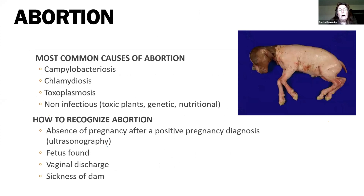The most common infectious diseases causing abortion are Campylobacter, Chlamydia, and Toxoplasma. Some non-infectious reasons for abortion include toxic plants, genetics — most commonly mismatching of chromosomes and development of genetic monsters that are not compatible with life — and nutritional causes. If we're not meeting the nutritional needs of our animals, both plane of nutrition or in some cases minerals, we can see development of placental insufficiency where the placenta isn't able to function properly, resulting in abortion.